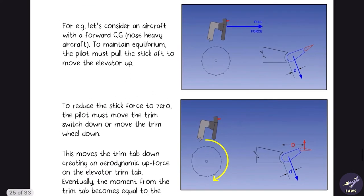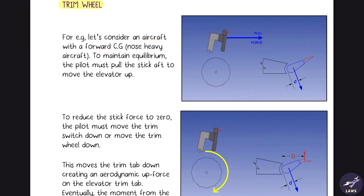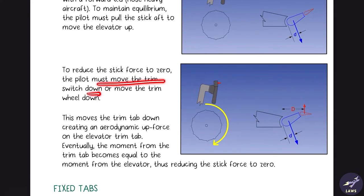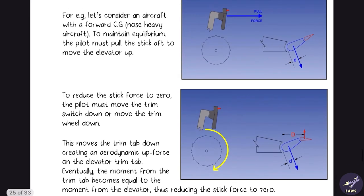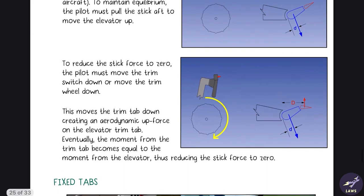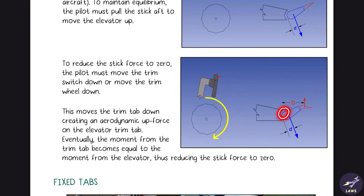With a forward CG, to maintain level flight the pilot must pull the stick aft to move the elevator up. To reduce stick force to zero, the pilot moves the trim switch down or rotates the trim wheel down. Rotating the trim wheel clockwise moves the trim tab down; moving it up moves the trim tab up. In this case, moving the trim wheel down moves the trim tab down so both moments balance, reducing stick force to zero.